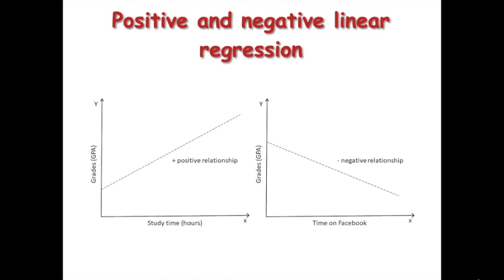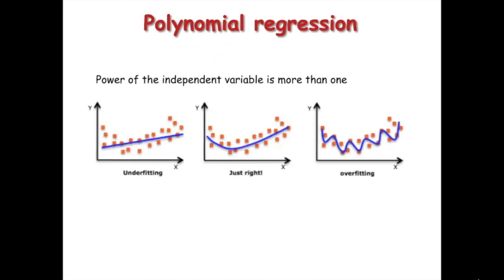We can have either positive or negative regression. Consider the independent variable study time and the dependent variable grades in exam. As study time increases, grades in exam also increase, so there is a positive correlation. This correlation can be represented by y = a + mx, where y is the dependent variable intercept and m is the slope of the line. A regression equation is a polynomial regression equation if the power of the independent variable is more than one. In this regression technique, the best fit line is not a straight line but rather a curve that fits the data points. While there might be a temptation to fit a higher degree polynomial to get lower error, this can result in overfitting. Always plot the relationships to see the fit and ensure that curve fits are based on the nature of the problem.